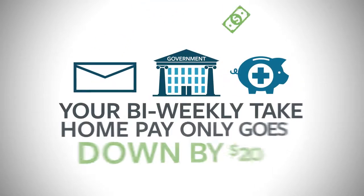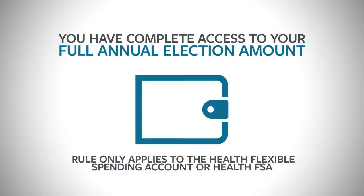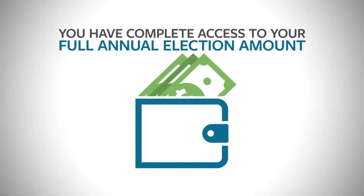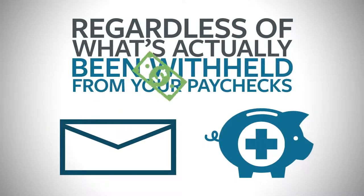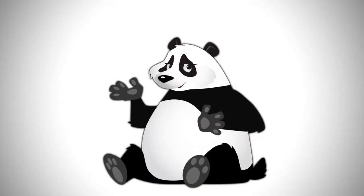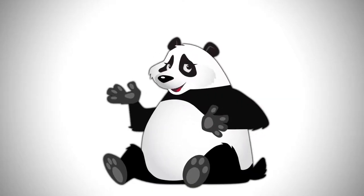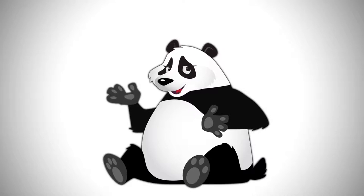Because this deduction is taken pre-tax, your biweekly take-home pay only goes down by $14. One of the great features of this account is that you have complete access to your full annual election amount on the first day of the plan year, regardless of what's actually been withheld from your paychecks. This feature acts like a line of credit. People love that they can use their flex spending plan to budget their expenses as opposed to having to pay them all at once.